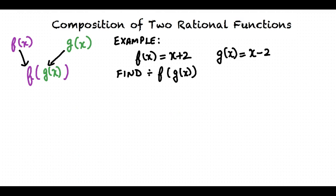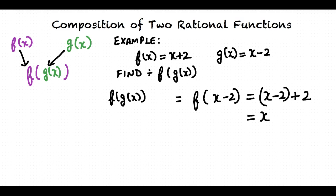Let us take another example. Let's say we have two functions f of x and g of x, with f of x equals x plus 2 and g of x equals x minus 2. We are required to find f of g of x. To find f of g of x, we substitute g of x for x in the f function. f of g of x equals f of x minus 2, which equals x minus 2 plus 2, which equals x.